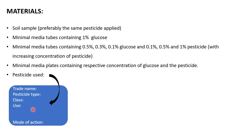You need to note down the trade name, pesticide type, class, use — whether against insects, fungi, or bacteria — and the mode of action. During college, we used Malathion as our pesticide for practicals, but it depends on your college or professor which pesticide is preferred or easily available. You can use Malathion, DDT, or the other examples shown previously.